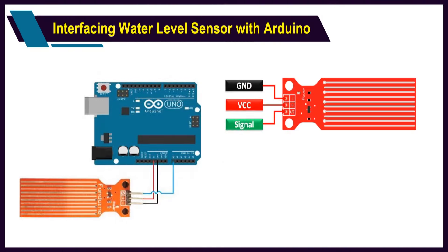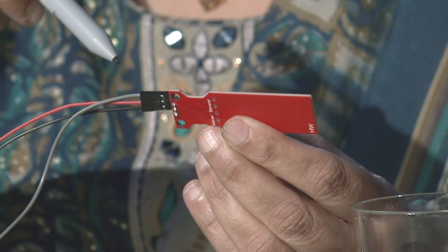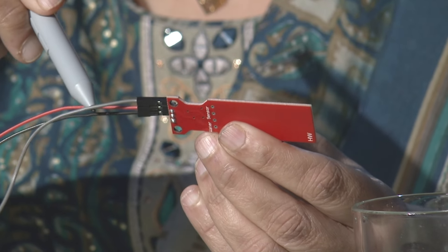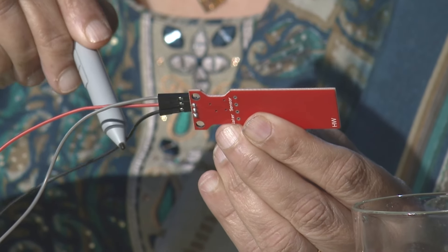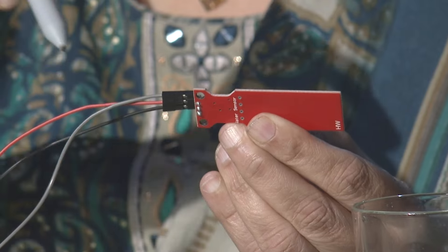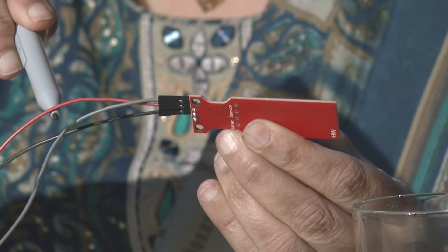As the diagram shows, the water level sensor has three pins: one is VCC, another is ground, and the third one is signal. You can see there are three pins — signal, ground, and VCC.